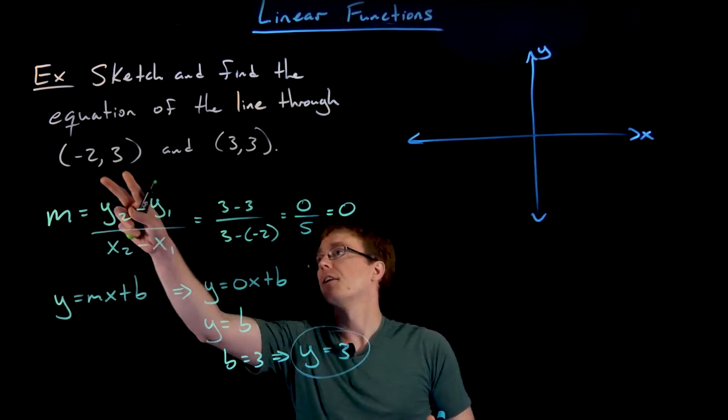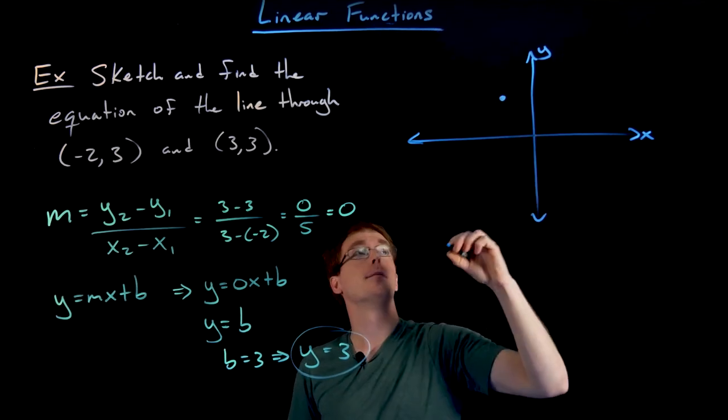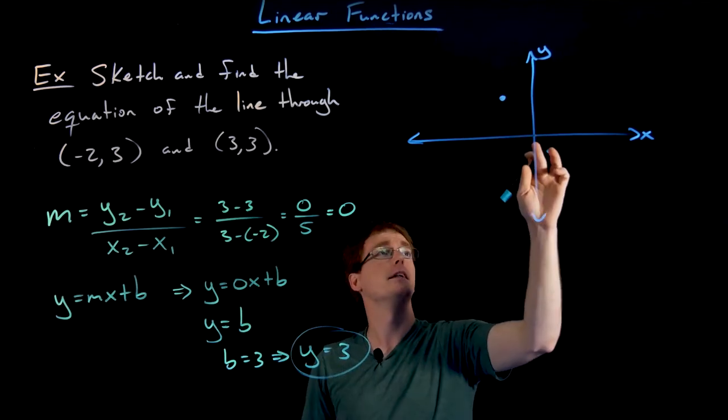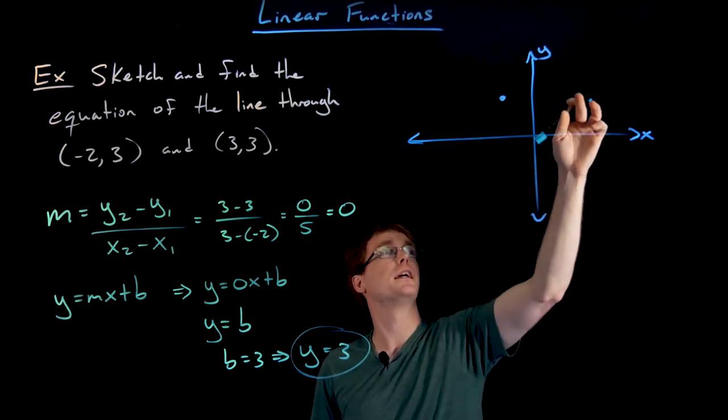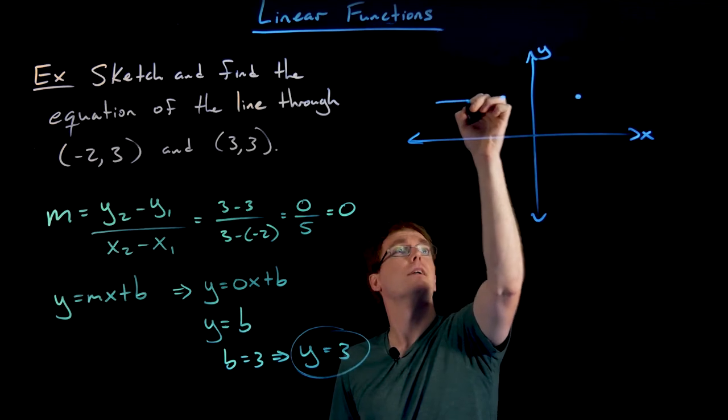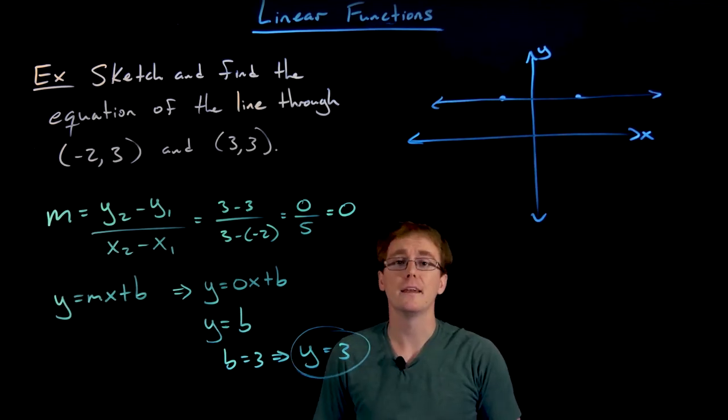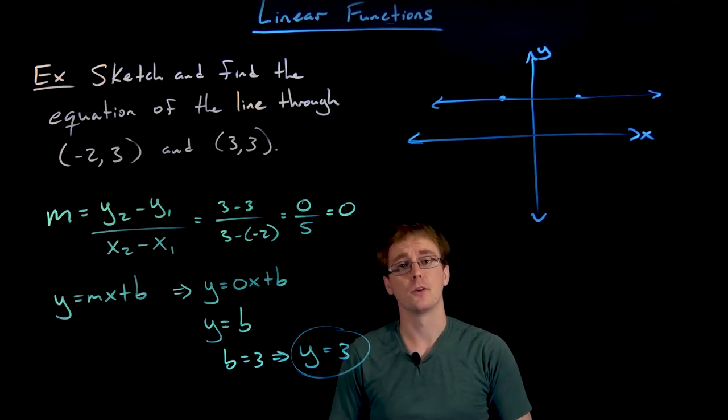Now let's go ahead and pull that up and see what we have going on in this situation. We know our two points are (-2, positive 3), so that's left 2 and up 3. That should be right about there. And our second point is (3, 3), so that's right 3 and up 3. That'll be right about there. Now if we connect these two points with a straight line, what kind of line do we get? We get a horizontal line.